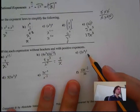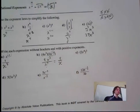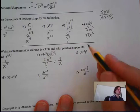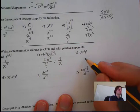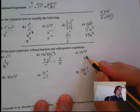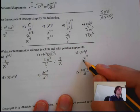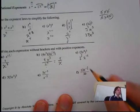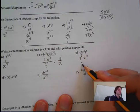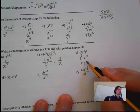This one here is the product rule. We have 3 times 4 which is 12, so that's x to the 12, and 2 to the 3 is 8. So we get 8x to the 12.